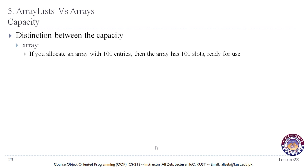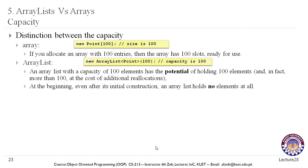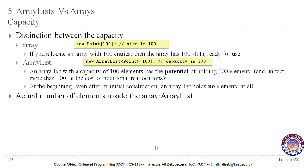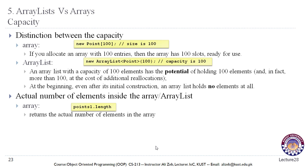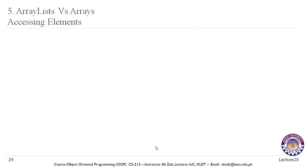If you allocate an array with 100 entries, the array has 100 slots ready for use. An ArrayList with capacity 100 has the potential to hold 100 elements — and in fact more than 100 at the cost of additional reallocations. At the beginning, even after initial construction, an ArrayList holds no elements at all. For the actual number of elements: use points.length for an array, and the size method for an ArrayList.